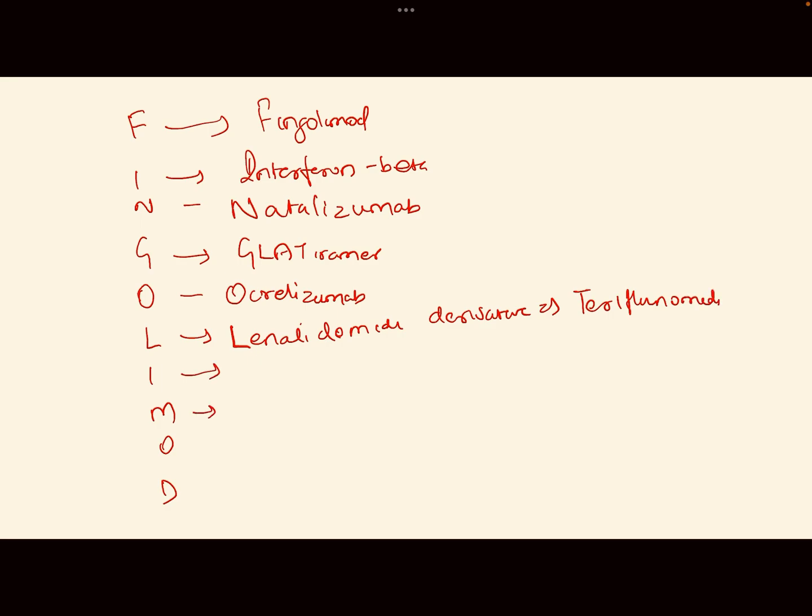The I can wait. M is mitoxantrone. O can again, so this time we will change it to A and it's alemtuzumab. And D is for dimethyl fumarate. So this is an easy mnemonic for drugs for multiple sclerosis.